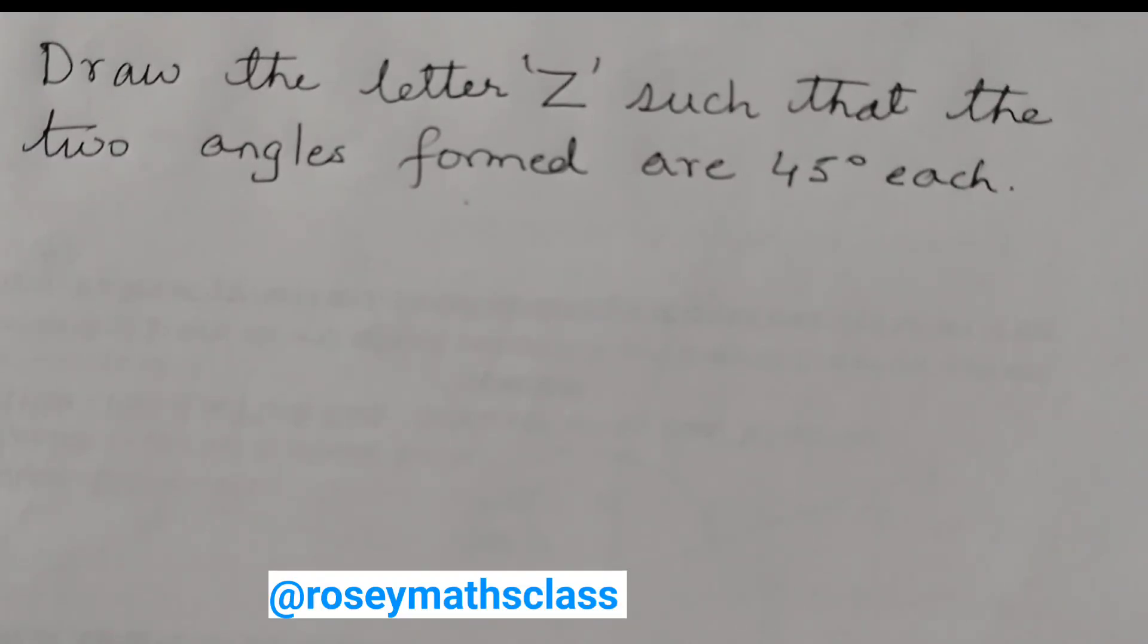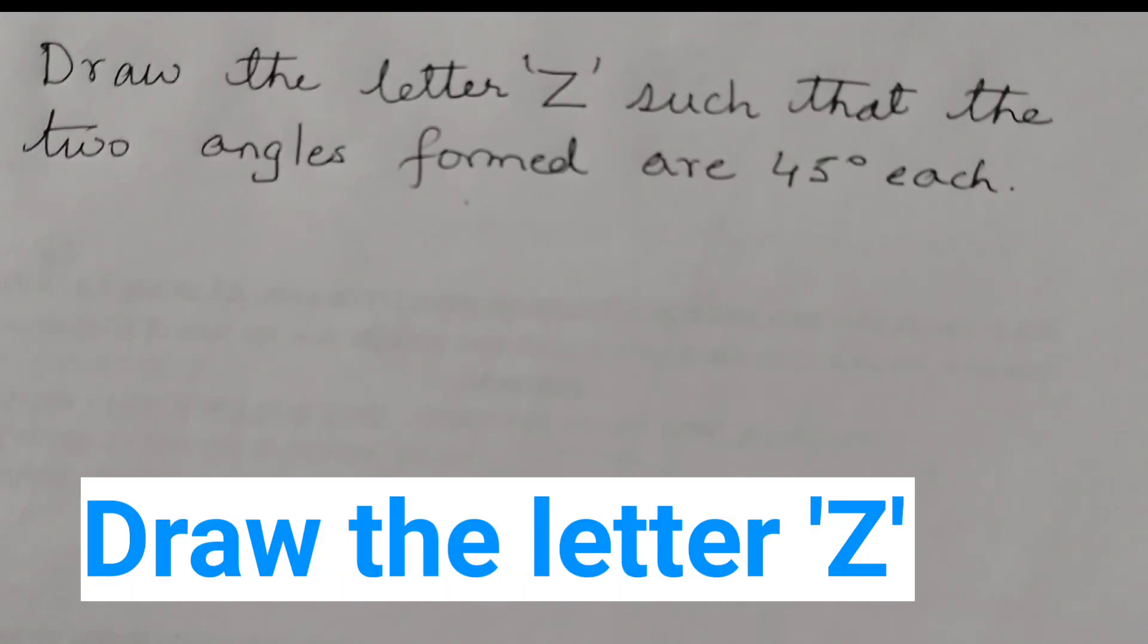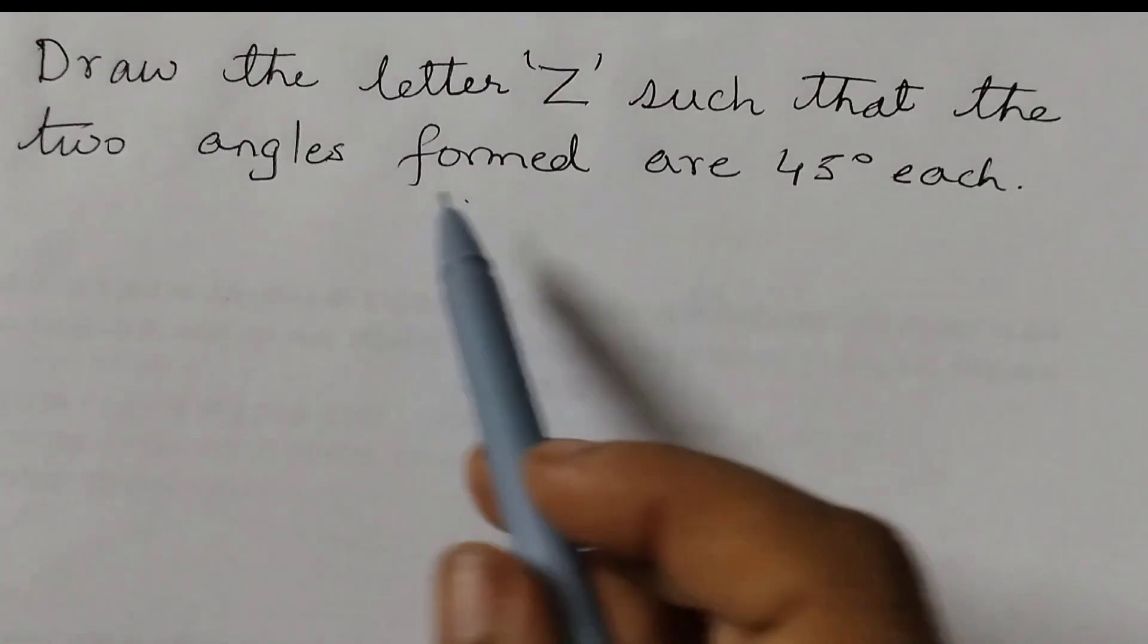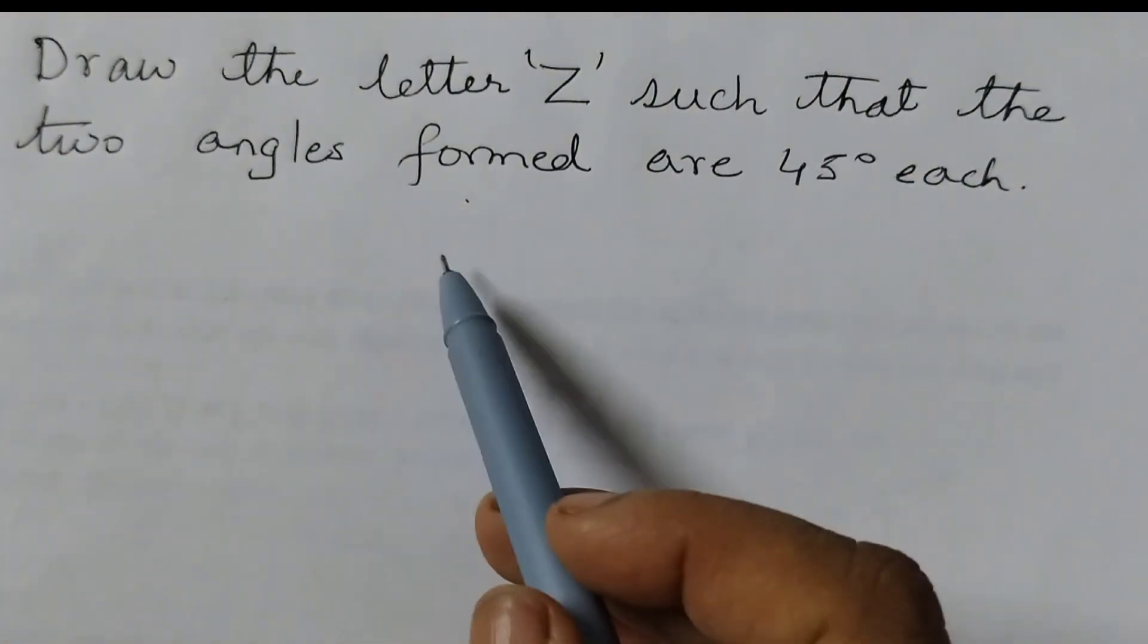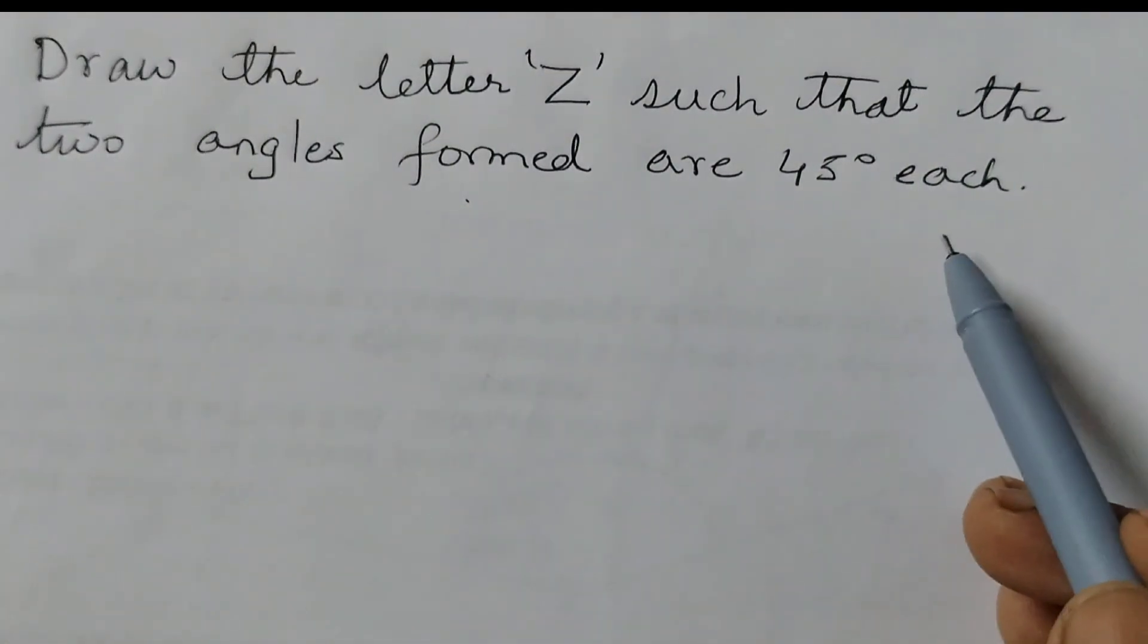Hello students, welcome back to Rosie Maths class. Today's video is a special request from one of our subscribers. We are going to learn how to draw the letter Z using two angles of 45 degrees. So draw the letter Z such that the two angles formed are 45 degrees each.